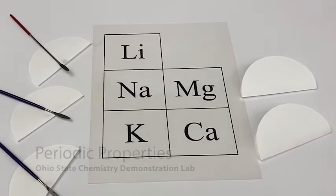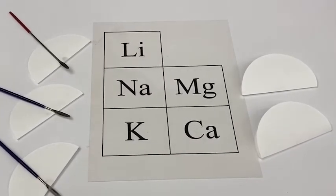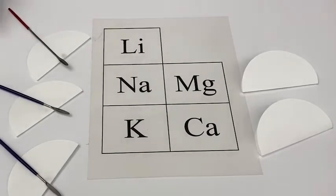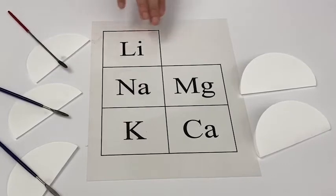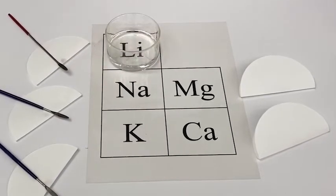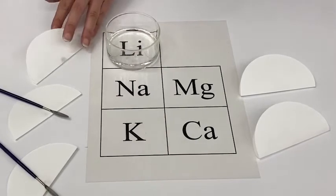This is one of my favorite demonstrations. We're going to look at the differences in reactivity down a family and across a row. You can see we have a selection of alkali metals and alkaline earth metals. Each of these dishes has phenolphthalein to indicate if there's a basic reaction.